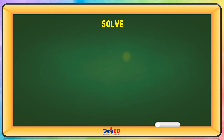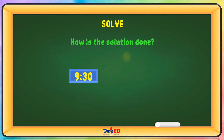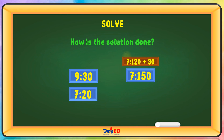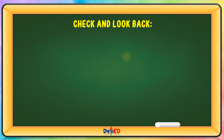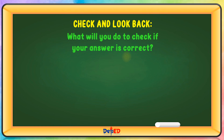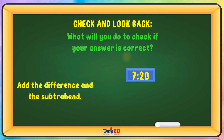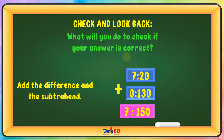Let us solve the problem. How is the solution done? 9:30 and 7:20. 9:30 will become 7:150, since the 2 hours is 120 plus 30, minus 7:20 equals 1:30. Let us check and look back. You add the difference and the subtrahend: 7:20 plus 1:30 equals 7:150, and it equals 9:30.